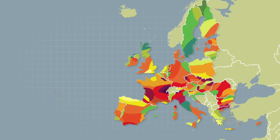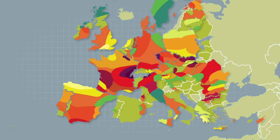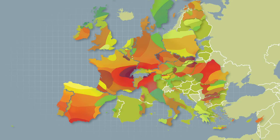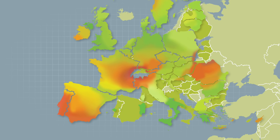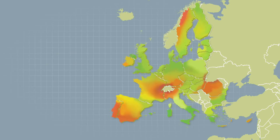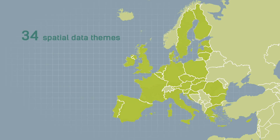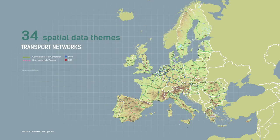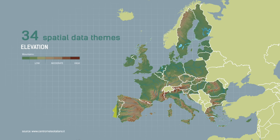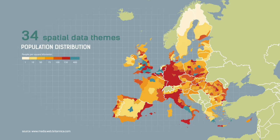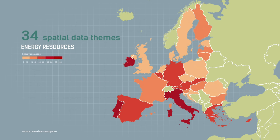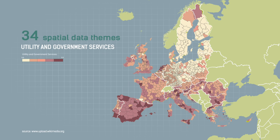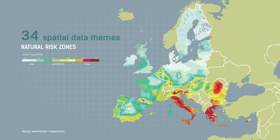The result was a European legislation called INSPIRE, with the goal to create an infrastructure for sharing spatial information between public authorities in Europe. INSPIRE defines common standards for 34 spatial data themes, including administrative units, transport networks, protected sites, elevation, population distribution, energy resources, utility and government services, and natural risk zones, to name a few.